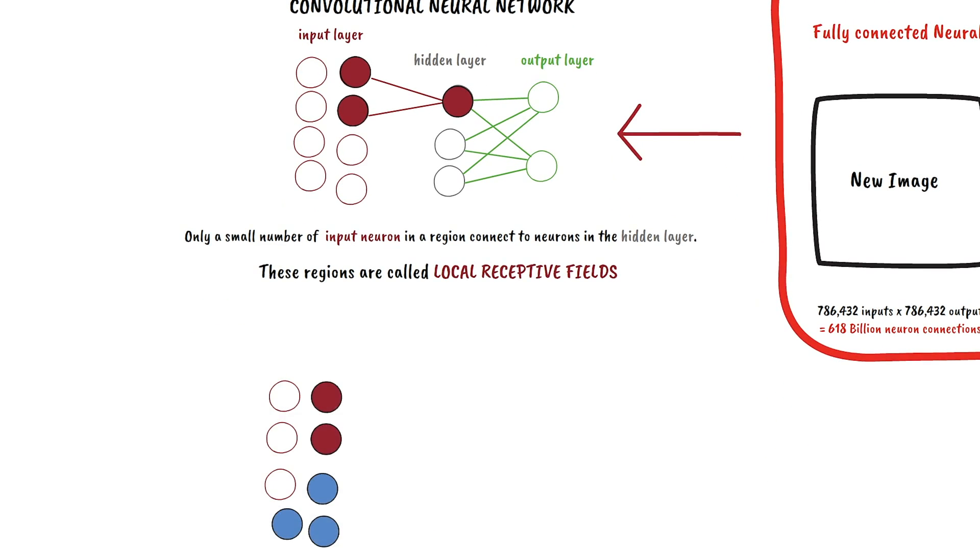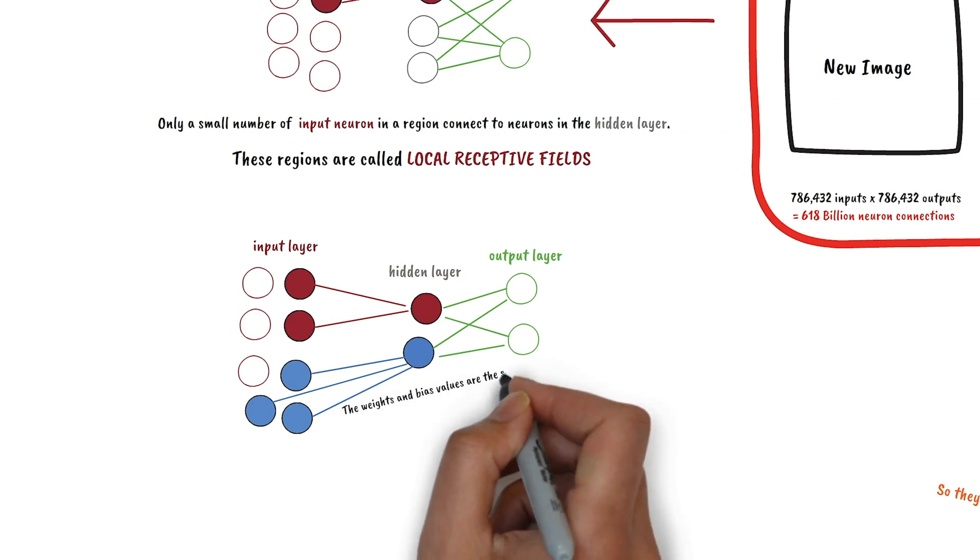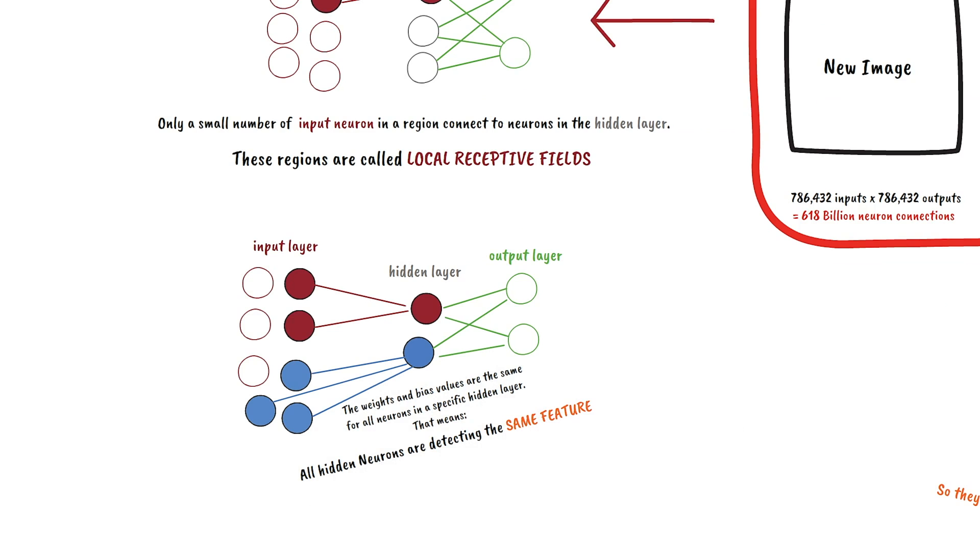Here, the weights and biases are the same for all neurons in a specific hidden layer. And that means that all hidden neurons detect the same feature in an image.